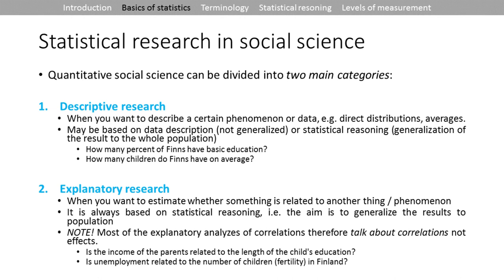Then we have explanatory research, when we want to estimate whether something is related to another thing or phenomenon. Now we are relating things to each other, and this is always based on statistical reasoning. The explanatory analyses are usually correlations, so we have to talk about correlations and not effects. We say that some things are associated with each other — these two phenomena are not related in a cause-and-effect fashion. One example of an explanatory research question: is the income of parents related to the length of a child's education?